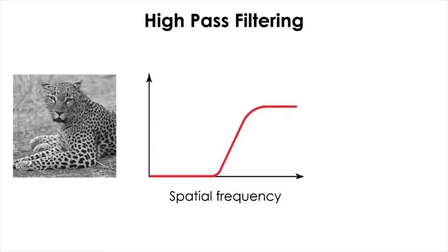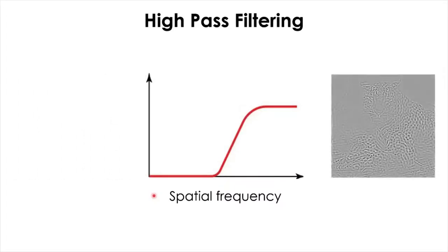Finally, we have a high-pass filter, which retains only high spatial frequency information and filters out all low spatial frequency information. Feeding the image through this filter, the result shows sharp contours and boundaries of objects and patterns, but the information about slow fluctuations in overall luminance is lost.